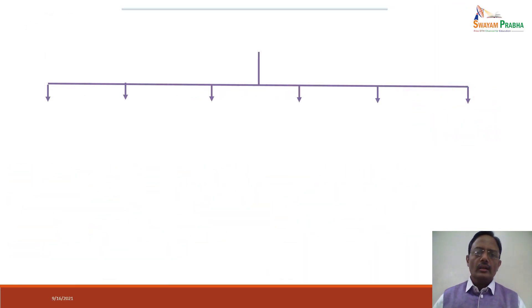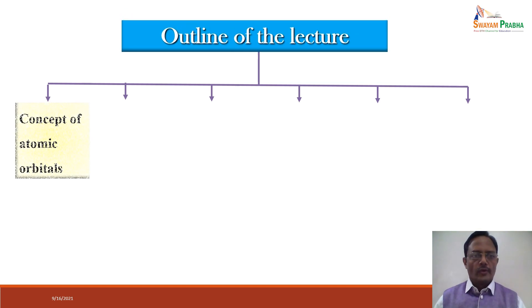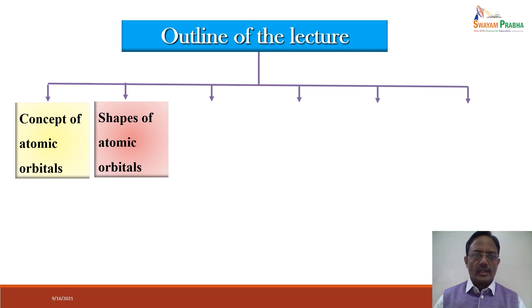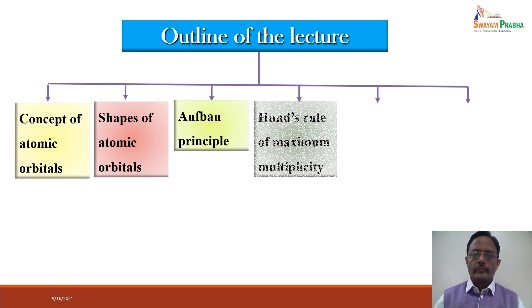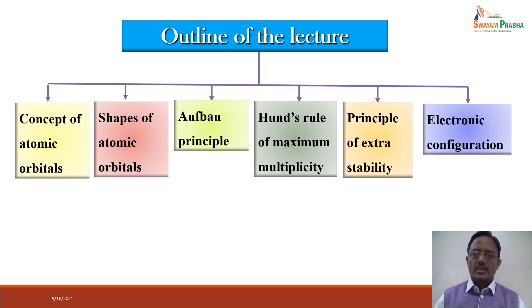The outline of this particular lecture is as follows. First, we will discuss about the concept of atomic orbitals. Then, we will discuss the shapes of various atomic orbitals, Aufbau principle, Hund's rule of maximum multiplicity, principle of extra stability, and in the end, we will be discussing about electronic configurations of various atoms as well as ions.